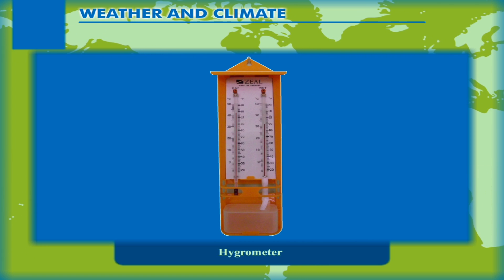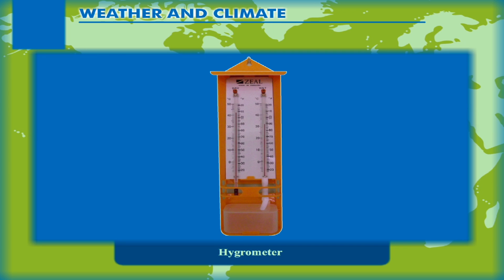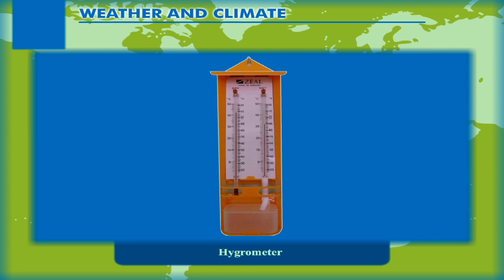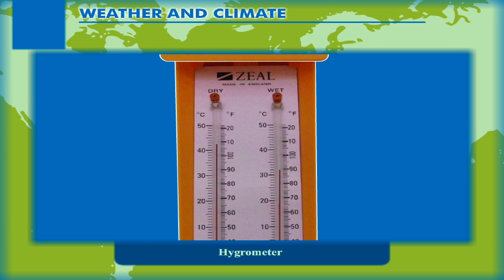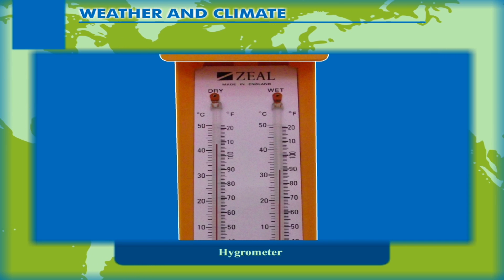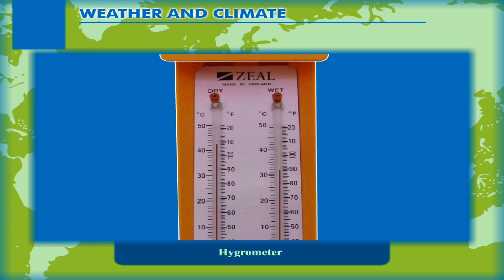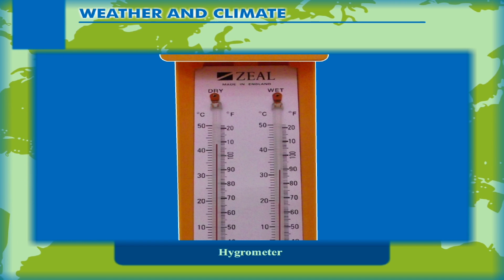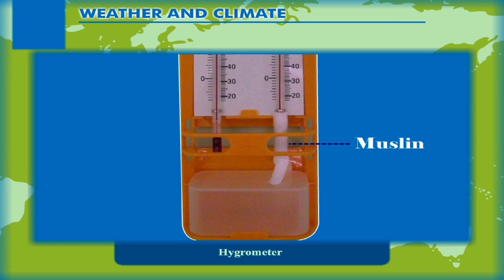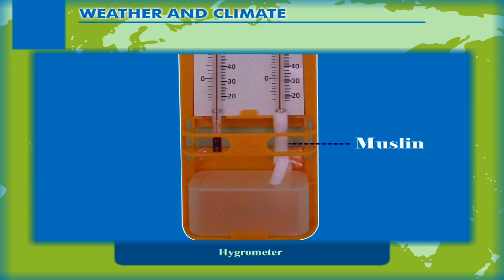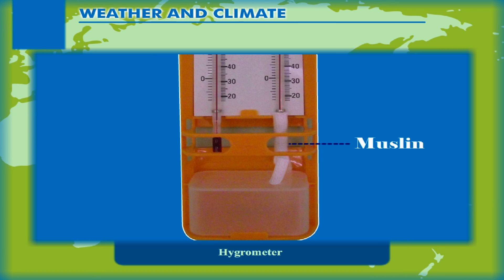Hygrometer. The instrument used for the measurement of humidity is the hygrometer, or the dry and wet bulb thermometer. It consists of two thermometers of the same type. However, the bulb of one thermometer is wrapped in muslin which is kept wet. The muslin is kept moist by using a wick which is dipped in a container of water.